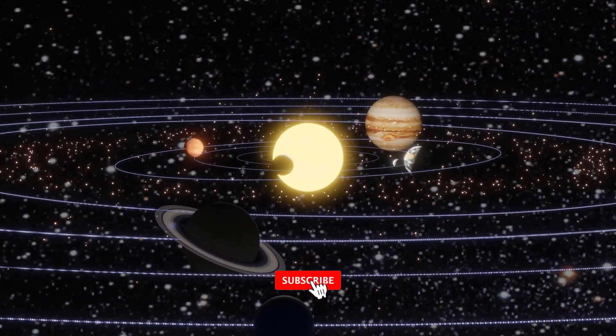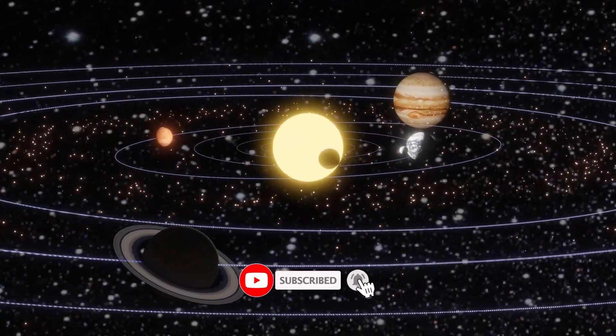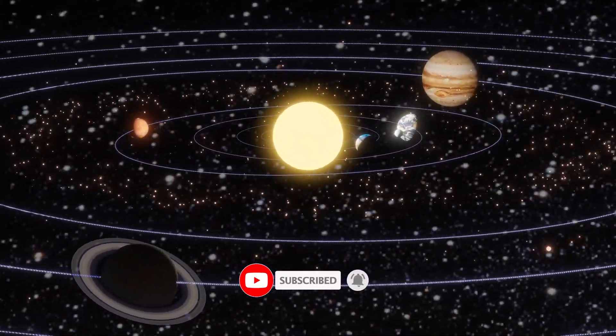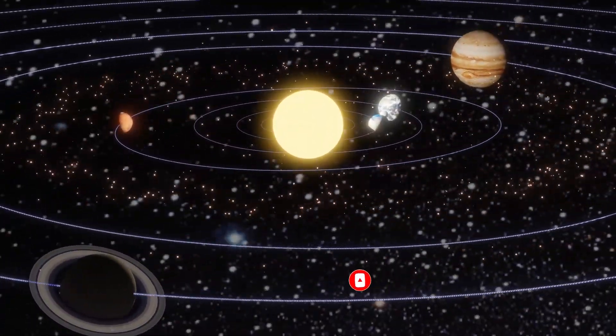The planet Earth is believed to have formed about 4.5 billion years ago as part of the same process that formed the solar system.